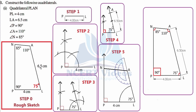Let's first follow step number zero, which we also call the rough sketch. It is better practice to first construct the side where we are also given an angle. Let's consider side PL equals 4 centimeter — at P we have 90 degrees, which can be easily constructed. So we consider line segment PL equals 4 centimeter as our starting point. With ruler and pencil we constructed this line segment, jotting down its measurement as 4 centimeter with vertices P and L.